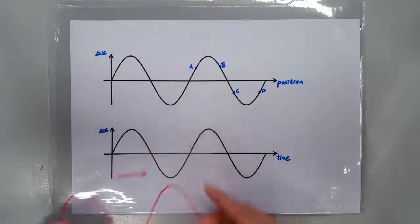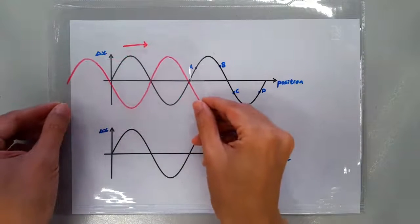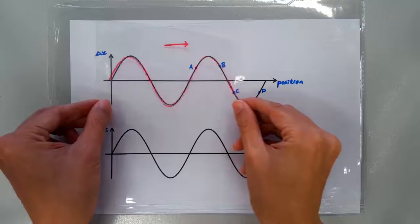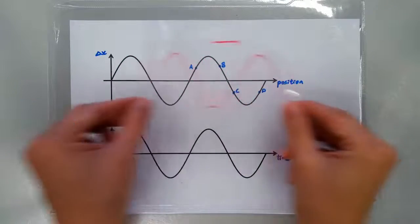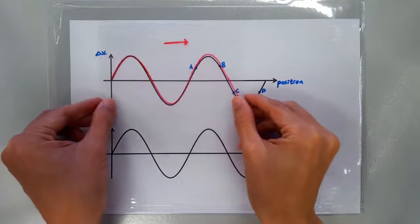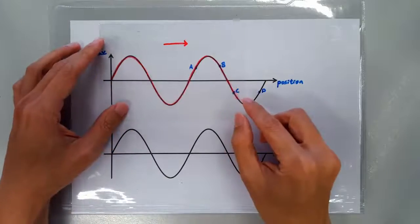Now remember, a displacement position graph is a snapshot. So there's actually a wave propagating towards the right, but we are just taking a snapshot of the wave at one instant in time.